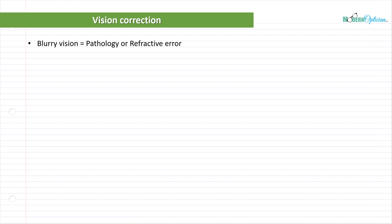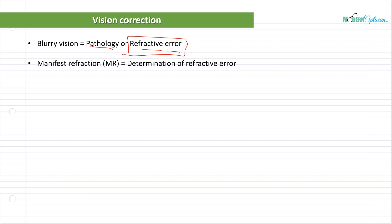We deal with blurry vision all the time in our line of work, and it usually involves one of two things: it's usually due to pathology or to refractive error. In the last module, we talked about pathology and how a healthy eye is required for normal vision. Everything outside of pathology usually refers to refractive error — that's optics in a nutshell. The refractive components of the eye not amounting to what they need to in order to give proper vision.